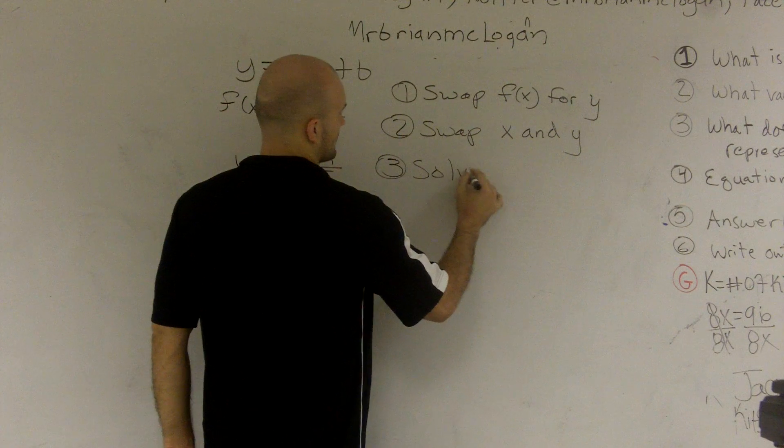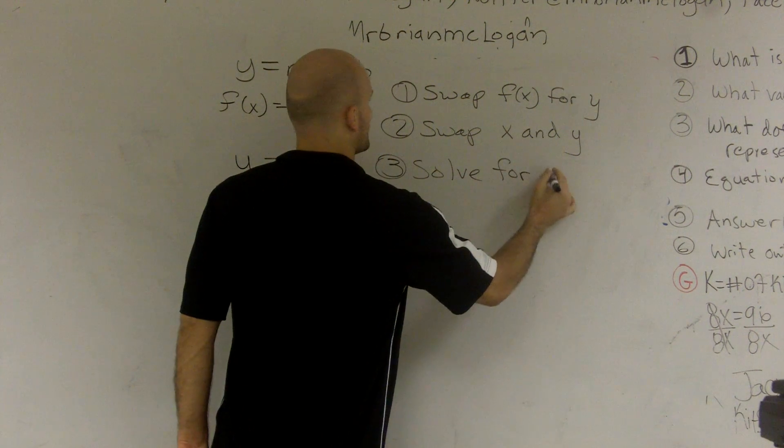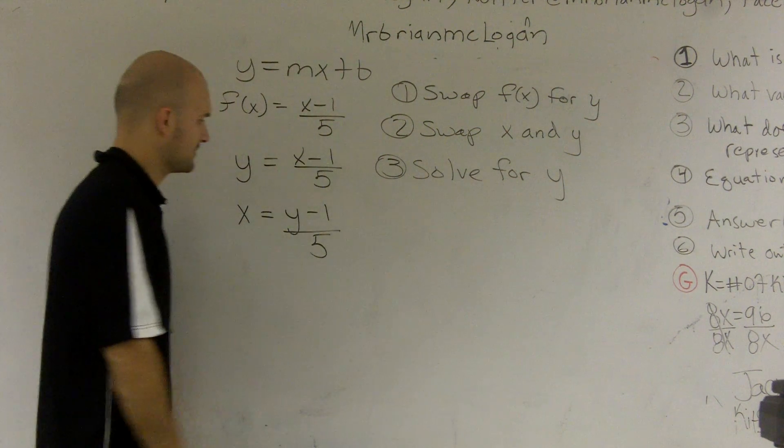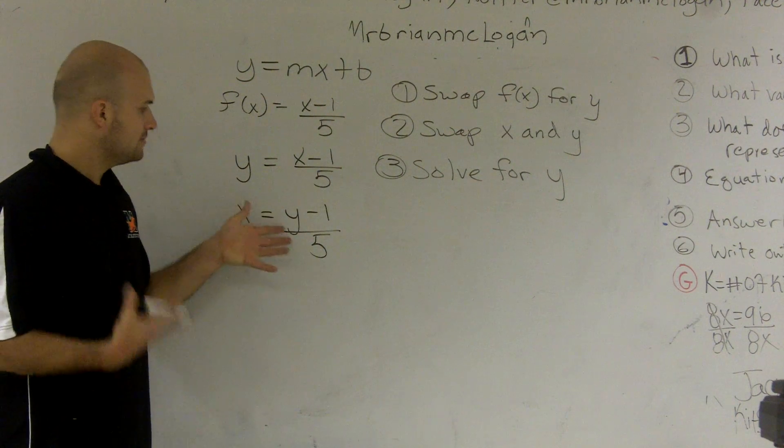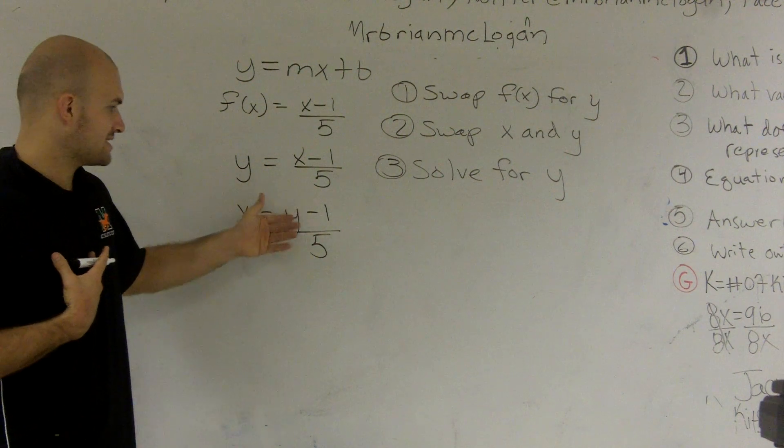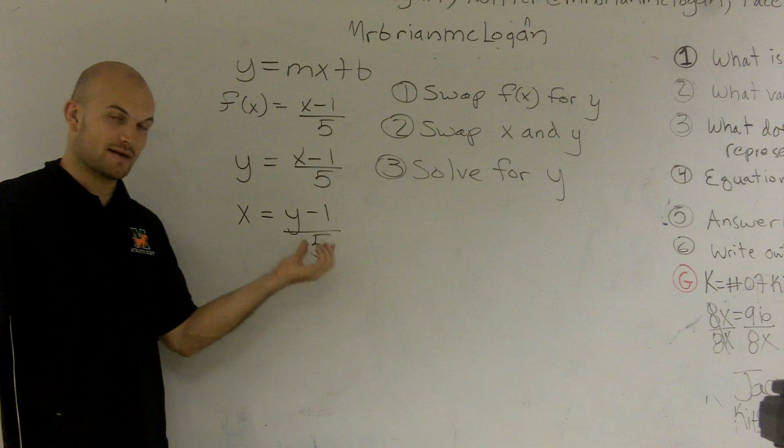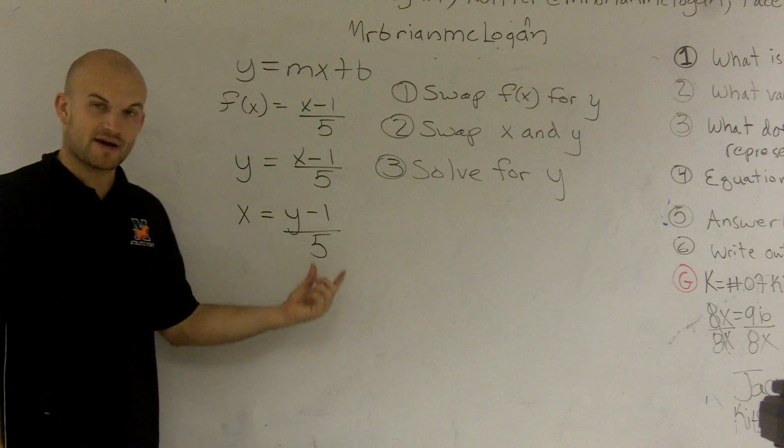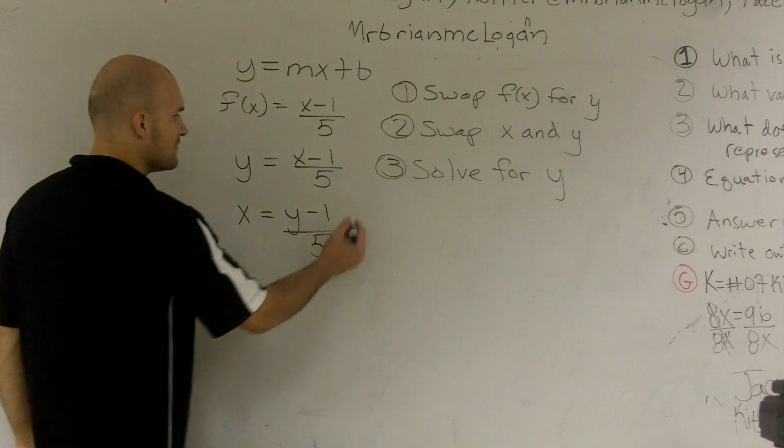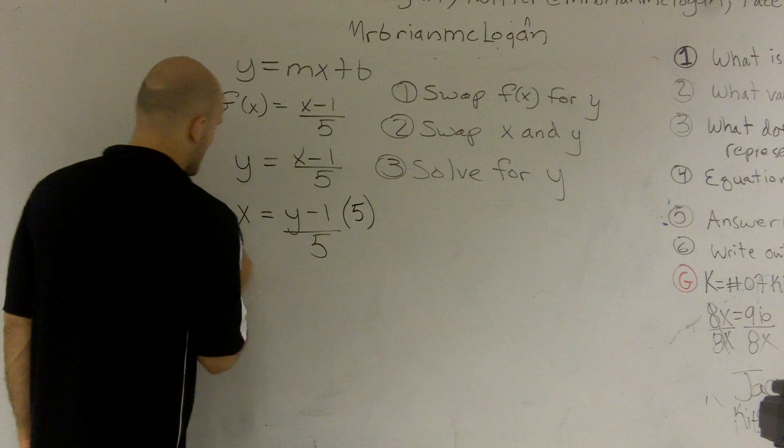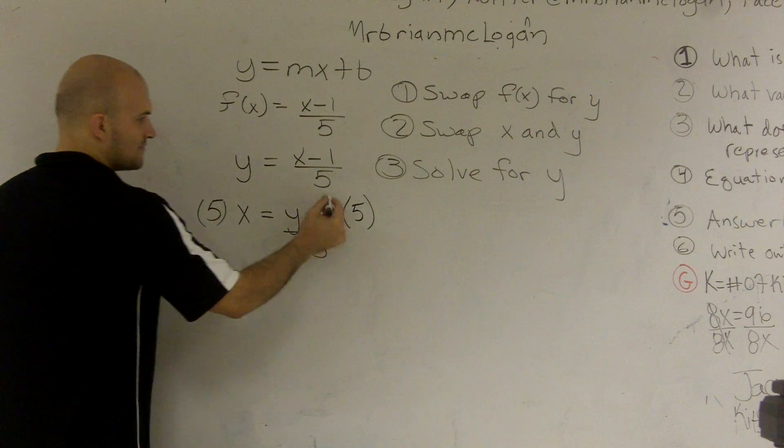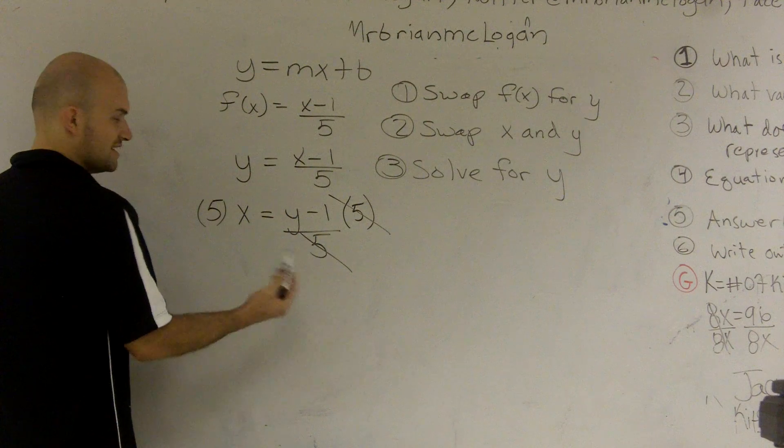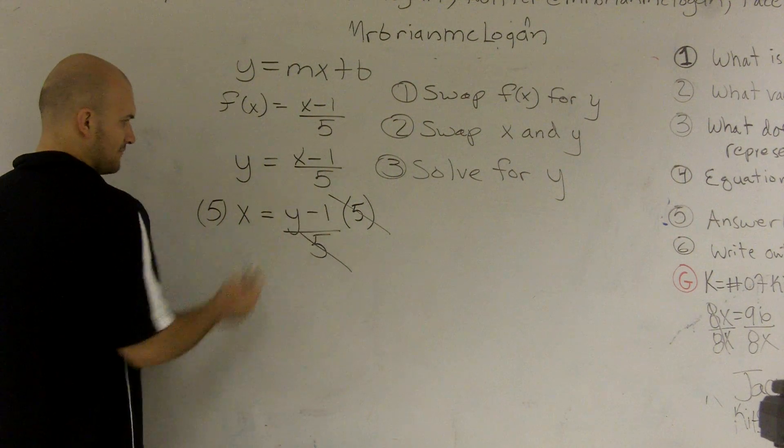is you're going to solve for y. So I see here I have a fraction. To undo my fraction, I see that my fractions mean I'm dividing by 5. So to undo division by 5, I need to multiply by 5 on both sides. Well, any number divided by itself is going to cancel out to equal 1. And therefore, I'll just be left with y minus 1.